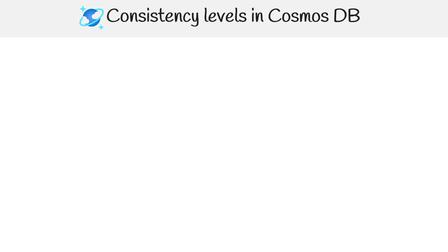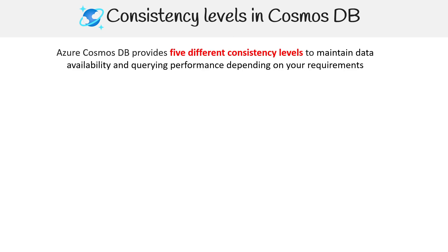A very important concept when talking about fully managed databases, especially NoSQL databases, is consistency. When am I going to see my data? When is it going to be consistent across all the servers that it's replicating data to? Azure Cosmos DB provides five different consistency levels to maintain data availability and querying performance depending on your requirements.